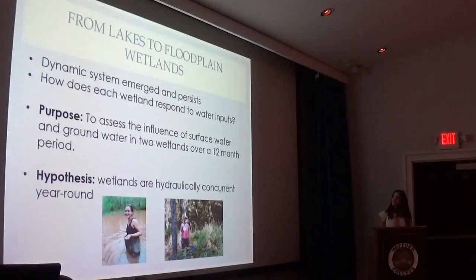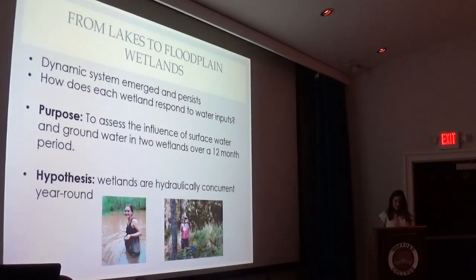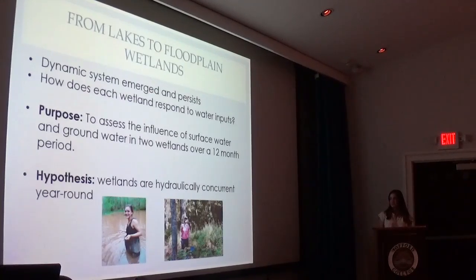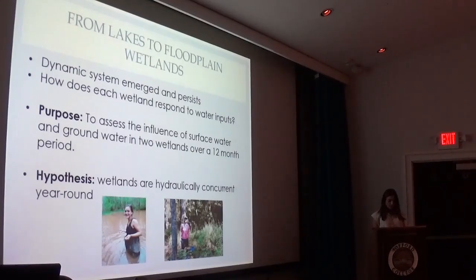As a result of all of this sediment being filled in over time, the floodplain ecosystem is very dynamic — it changes, and there's always things happening in the wetland. The biggest questions that came to mind were: what are the major inputs of water into the wetland, how does each wetland respond, and what are the factors that affect this dynamic ecosystem? The purpose of my study was to assess the influence of surface water and groundwater in two wetlands over a 12-month period. Because these two wetlands are in such close proximity and have a very similar history of emergence, I hypothesized that the two wetlands are hydraulically connected — meaning they are concurrent in their response to water inputs and do not fluctuate independently from each other.